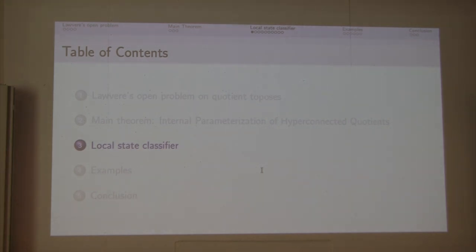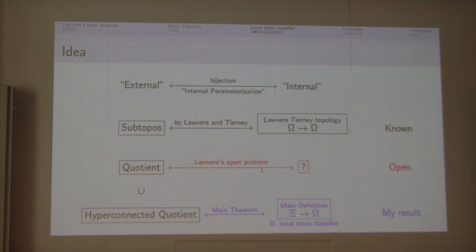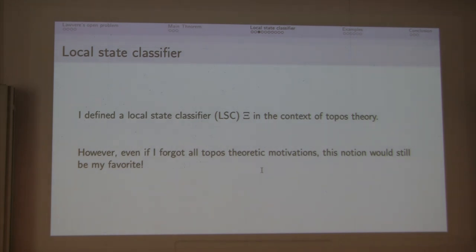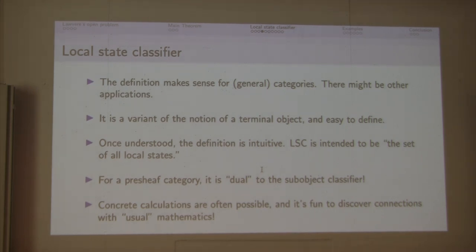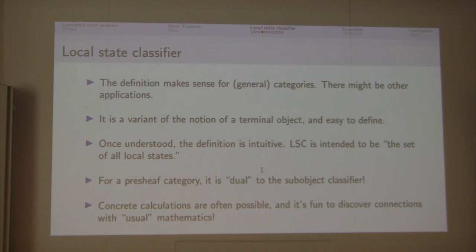From now, let me explain what local state classifier is. I defined the local state classifier in the context of topos theory, but even if I forgot all the topos-theoretic motivations, this notion would still be my favorite. I will define it precisely in the next slide. The definition makes sense for general categories, not only for toposes, and there might be other applications. It is a variant of the notion of terminal object and is easy to define. Once understood, the definition is intuitive.